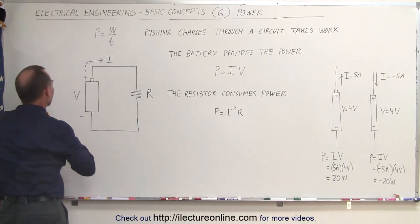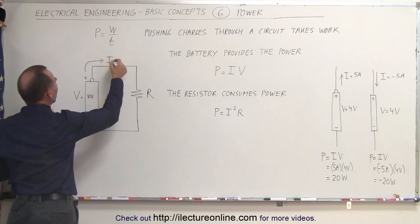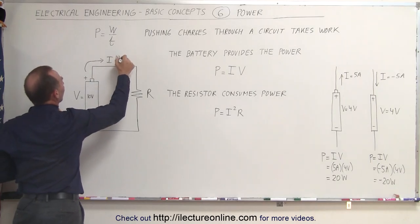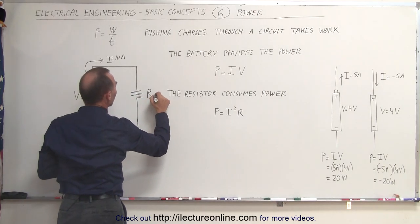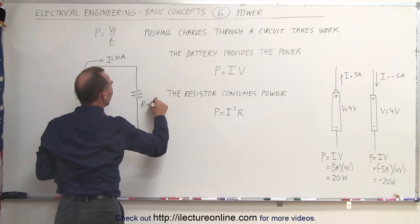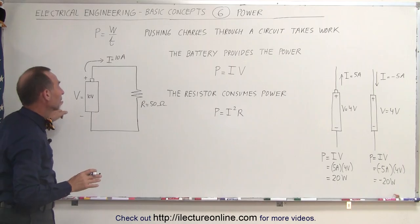So let's put some numbers in so you can see what that looks like. Let's say we have a 10-volt battery. This is 10 volts. Let's say we produce 10 amps of current. This is 10 amps. Let's say that our resistor is equal to 50 ohms. Let me write it over here. Our resistor is equal to 50 ohms. How much power is provided by the battery?